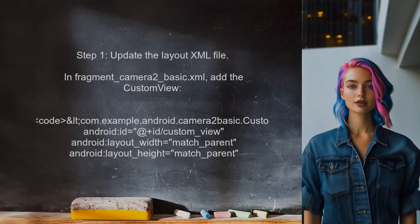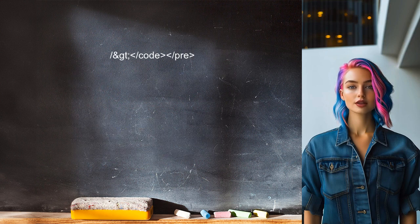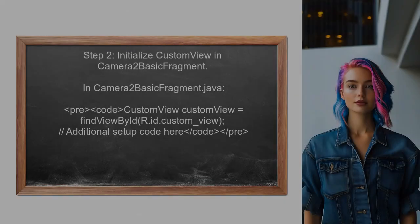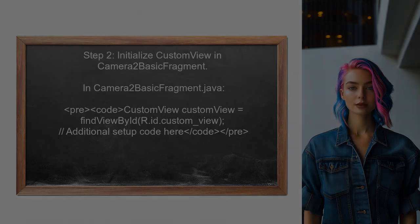To begin, the user needs to modify the layout XML file to include the new transparent overlay. This will allow the CustomView class to be displayed on top of the camera preview. Next, the user should ensure that the CustomView is properly initialized in the Camera2BasicFragment class — this involves finding the CustomView by its ID and setting it up.